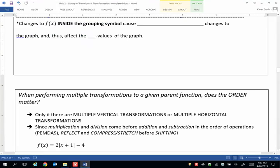Let's summarize all of the horizontal transformations. So changes to f(x) inside the grouping symbol of the function notation, they cause horizontal changes. And thus they affect the x values of the graph.